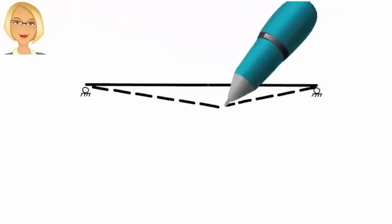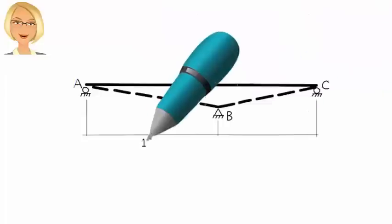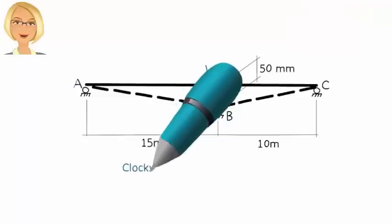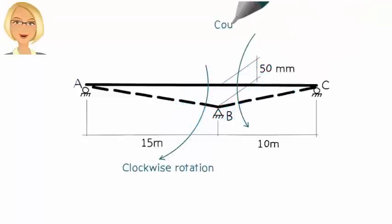To begin our analysis, let us observe the change in the bridge geometry caused by the settlement. Note that the downward shift at B forces segment AB to rotate clockwise and segment BC to rotate counterclockwise.